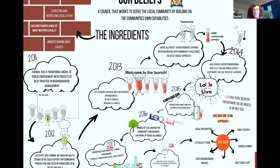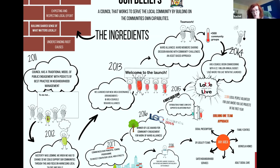In 2016, we were winners of the LGC award for community engagement for the work of the ward alliances. In 2017, we commenced our principal towns programme to invest £5 million in our local high streets. In 2018, we launched the town spirit awards. In the right-hand corner, you can see the building one team approach — bringing together adult social care, neighbourhood nursing, safer neighbourhood services, and GP locality teams — pooling resources, expecting and respecting local effort, building a shared sense of what matters locally and understanding our root causes.